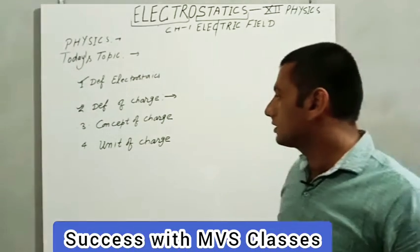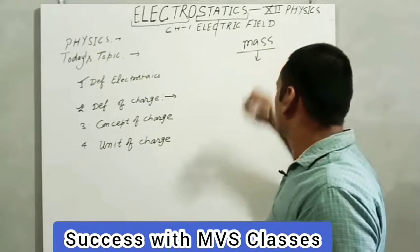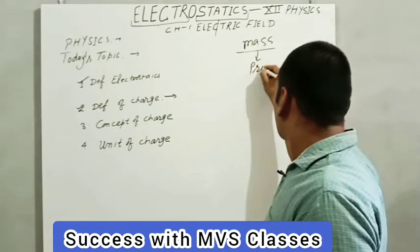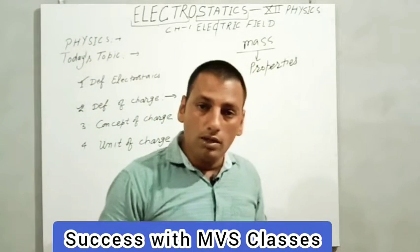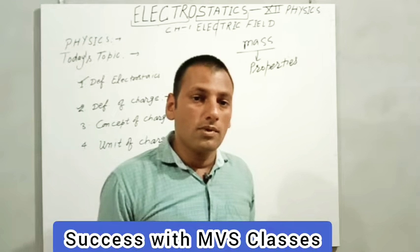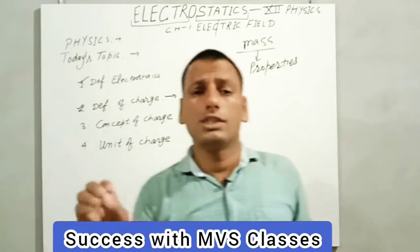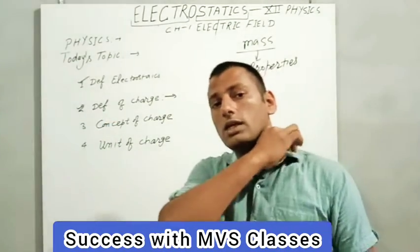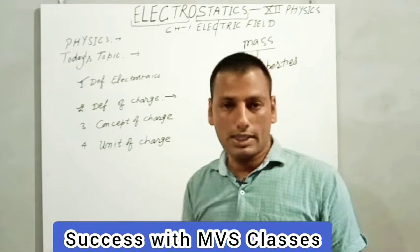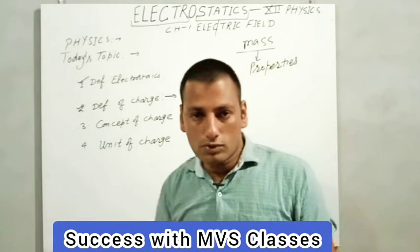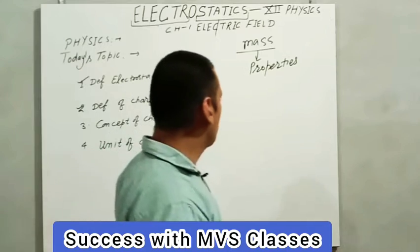My dear students, जब हम charge की definition बनाना चाहते हैं, तब हमें mass की help लेनी पड़ती है। Mass क्या है? किसी भी matter की एक property है, जिसके according वो किसी भी अन्य object के साथ force of attraction show करता है। जब हम gravitational force के बारे में पढ़ते हैं, तब Newton's के according दो body के बीच force of attraction होता है। वो force of attraction किसके कारण है? Due to mass of a body — body के mass के कारण होता है।